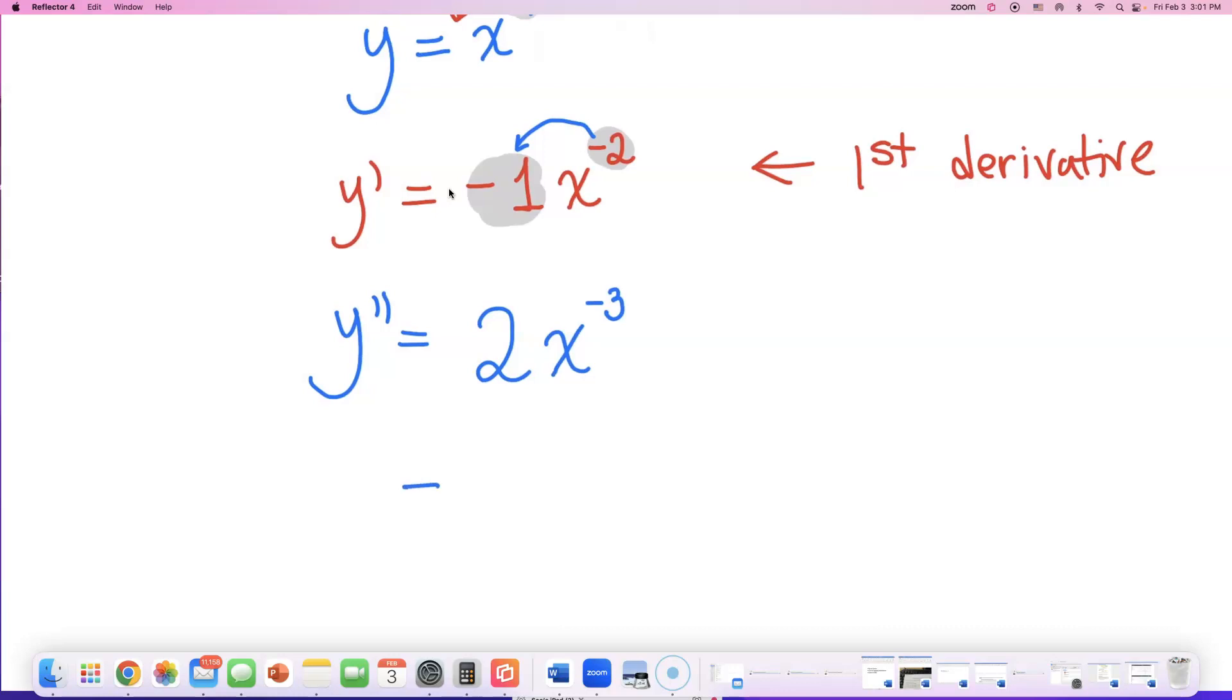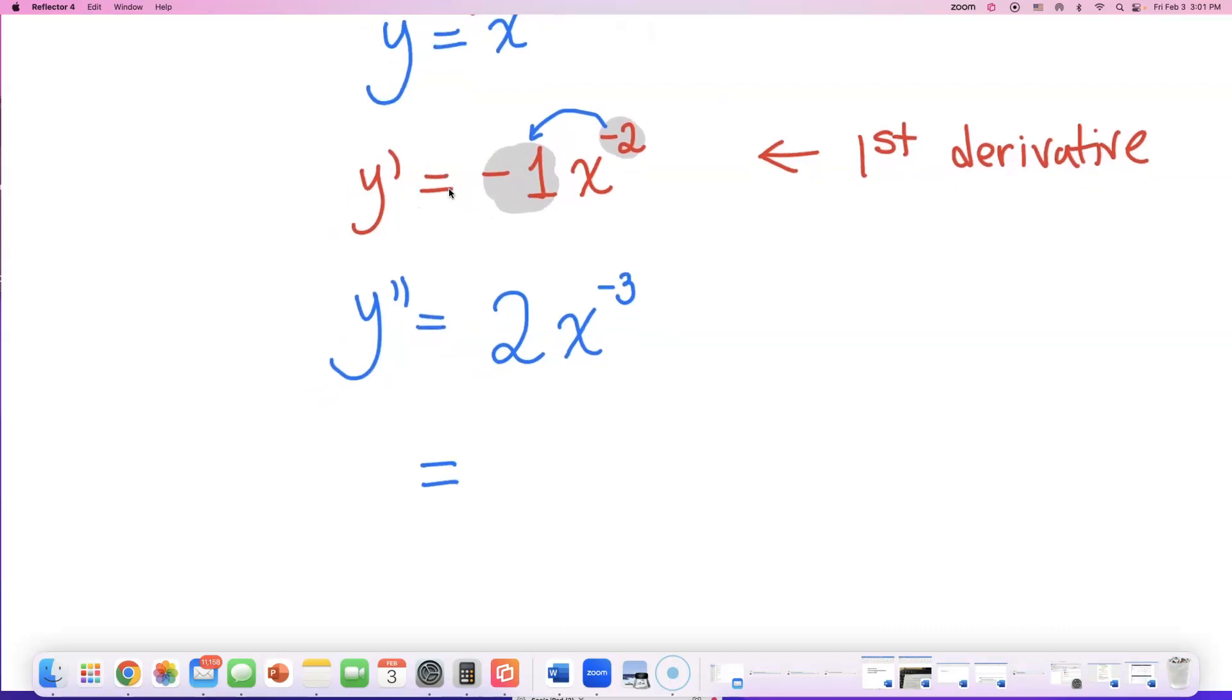If you want to rewrite this by putting it back in a fraction form, it's going to look like this. The 2 is going to stay on top of the fraction. But in the denominator, you can put x to the third power. So both answers are correct. This is good. And this is also good.